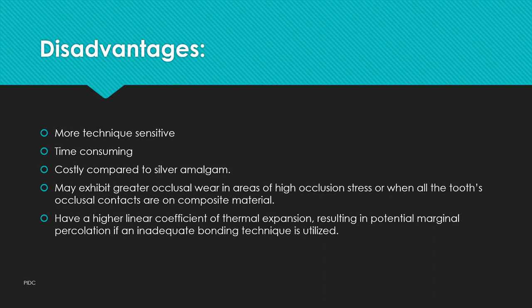Disadvantages: composites are more technique sensitive — you have to apply prime and bond properly, and the process is time consuming. They are costly compared to silver amalgam, and may exhibit greater occlusal wear in areas of high occlusal stress or where all occlusal contacts are on the composite material. Amalgam is stronger than composite, but composite is better aesthetically. Composites also have a higher linear coefficient of thermal expansion, resulting in potential marginal percolation if an inadequate bonding technique is used.